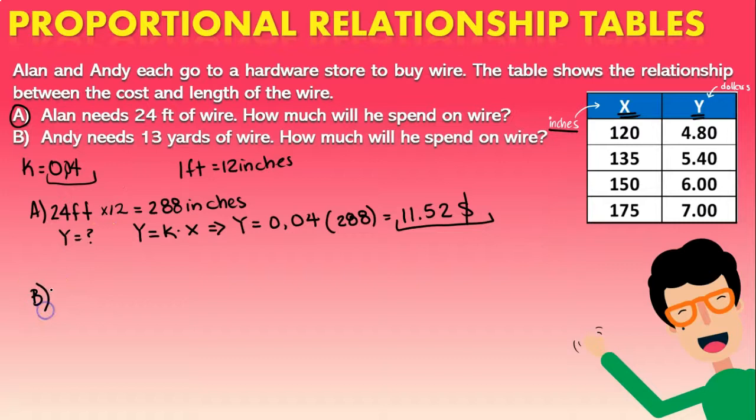Now in the situation B we're told that Andy needs 13 yards of wire. Now you have to know that one yard is actually 36 inches, meaning that in order to find the amount of inches we have to multiply times 36. So 13 times 36 is going to be 468 inches. Now of course he's going to be spending a little bit more of money.